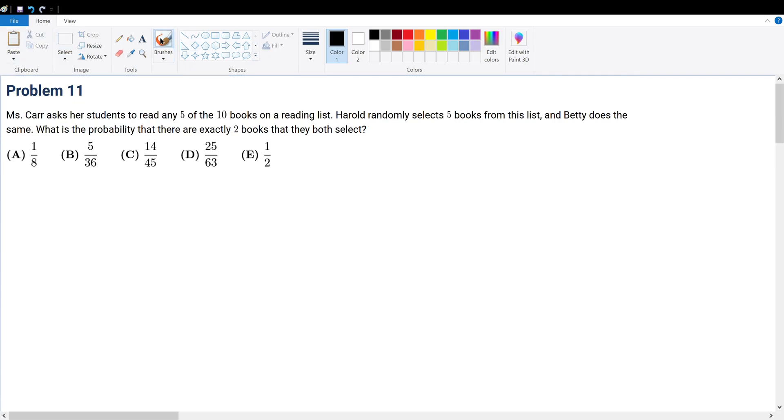Problem 11: Ms. Carr asks her students to read any 5 of the 10 books on the reading list. Harold randomly selects 5 books from this list and Betty does the same. What is the probability that there are exactly 2 books that they both select?